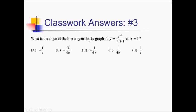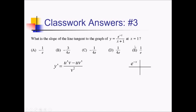For this problem we need the slope of the tangent line for this graph at x equals 1. Essentially we need the derivative, which is going to require the quotient rule, and then we're going to plug in 1. Quotient rule: u prime v minus u v prime over v squared. Using the box and ribbon, I have my numerator of e to the negative x, denominator of x plus 1, and their derivatives — negative e to the negative x, and 1 respectively.